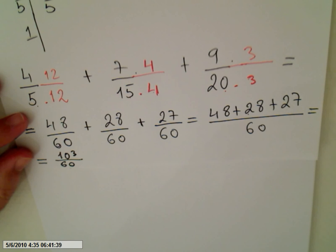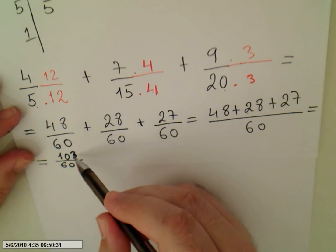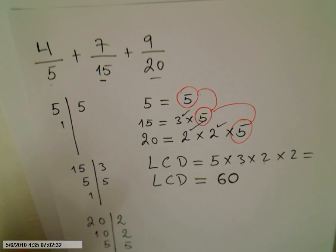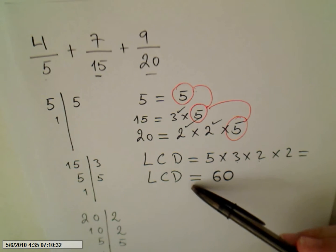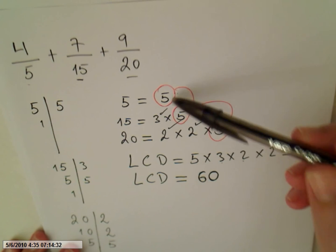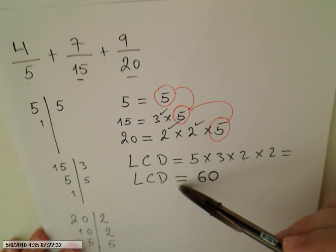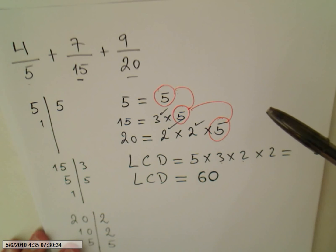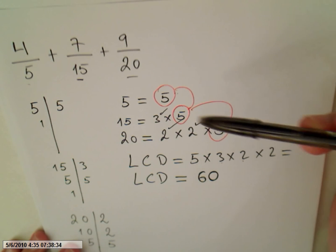Well, okay, and our final result since we cannot reduce this fraction is 103 over 60 as 60 was our least common denominator. So always do that, okay? If you have to add three fractions, you still have to find the least common denominator. But this time you have to prime factorize all the three denominators. And do not forget that the least common denominator will be the product of the common and uncommon factors. So the common factors are the ones that will be here in every single number. Okay, but use only one.